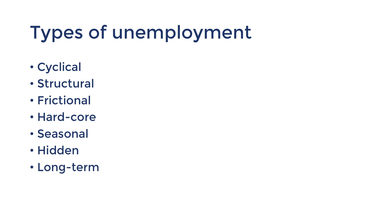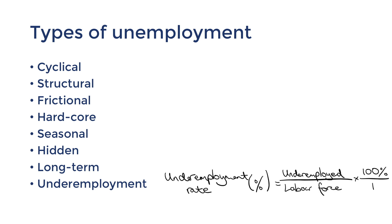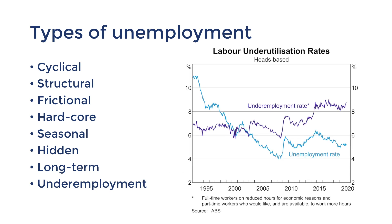One more term we must learn is underemployment. This refers to people who are working less than full-time but would like more hours. The ABS publishes the underemployment rate, calculated as the number of underemployed as a proportion of the labour force, shown as a percentage. It's worth studying trends in underemployment as well as unemployment. The causes for high underemployment are similar to those of unemployment — for example, cyclical factors can cause falling demand for labour, but there are also structural factors, such as industries preferring part-time or casual working arrangements, known as casualisation.